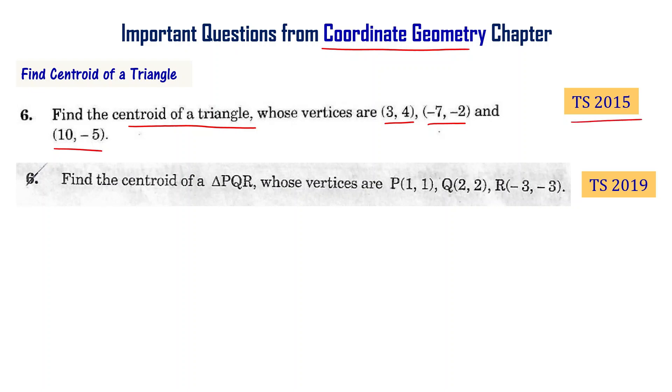This question is from the Telangana State Final Exam 2015. Find the centroid of triangle PQR whose vertices are P(1,1), Q(2,2), and R(-3,-3). This is from the Telangana Final Exam 2019. Let us solve these two problems now.